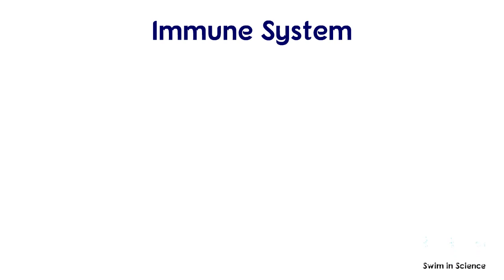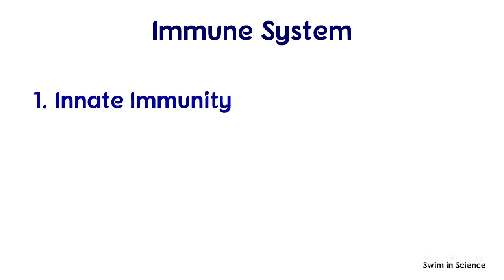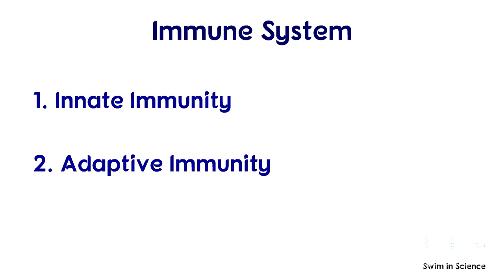Our immune system has two fundamental lines of defense. They are innate immunity and adaptive immunity.